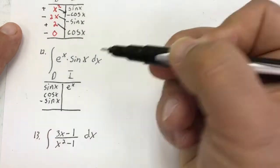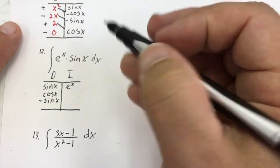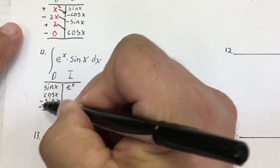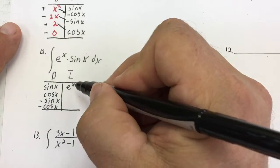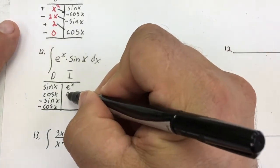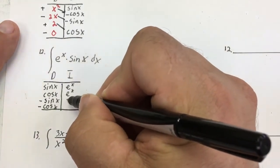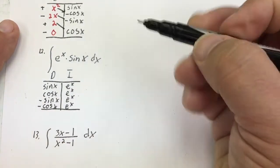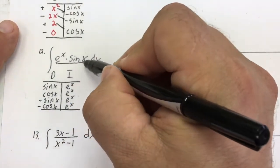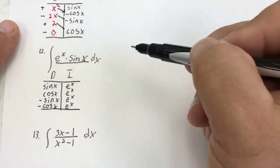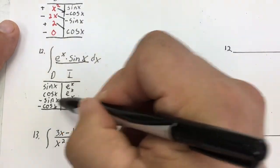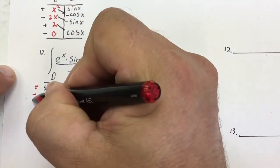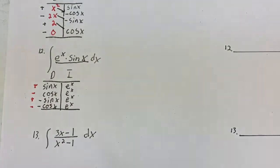I think that's all I'm supposed to do, but I'm going to do another derivative just in case. The derivative of negative sine x is negative cosine x. The integral of eˣ is eˣ — that stays the same all the way down. What I'm looking for is a repeat, and I think I have it. Don't forget to do your plus, minus, plus, minus.